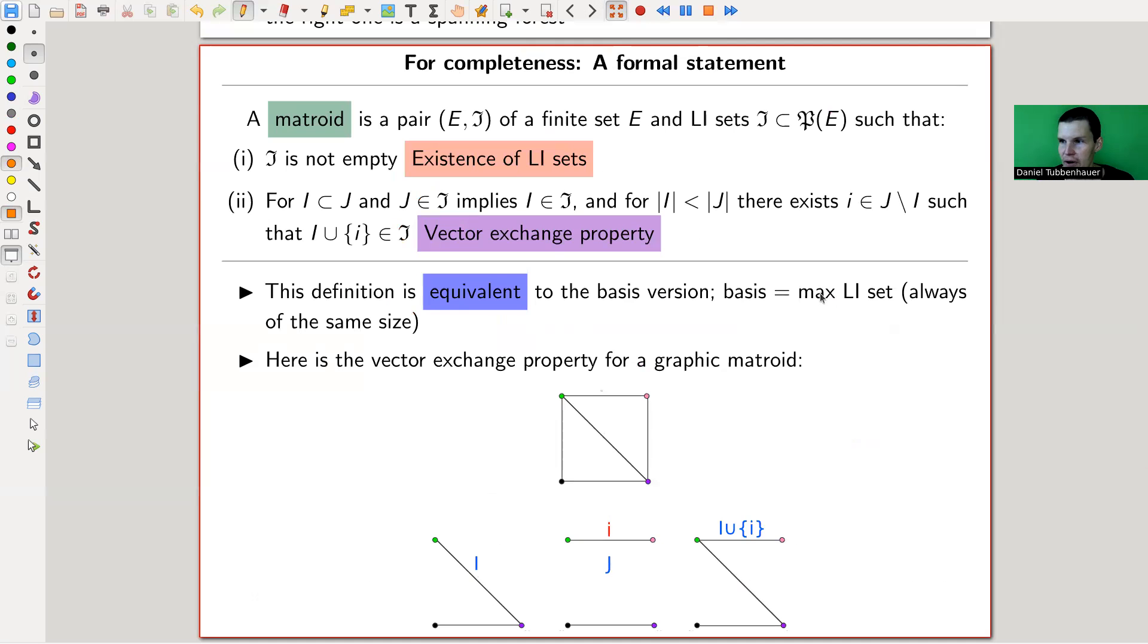So a matroid can be equivalently defined compared to the last video, which used bases, as follows. It's a pair of some ground set, the same as in the basis setting, and now a set which we call linear independent, such that it's not empty, the usual existence. And then we have the vector exchange property, which is very similar to the basis exchange property. And it says essentially the same thing. So whenever you have i in j, and both of them are, j is assumed to be linear independent, every subset of a linear independent set is linear independent. That's what it says.